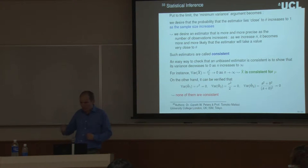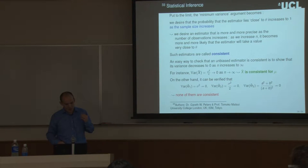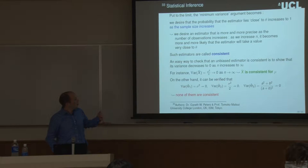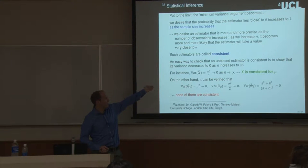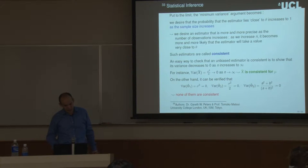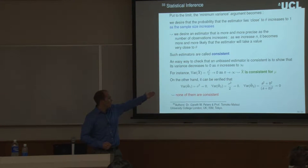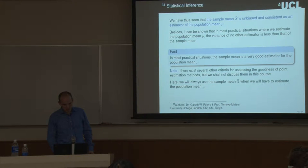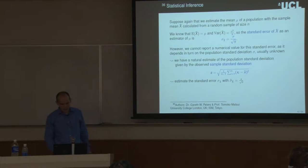The third desirable property of an estimator is consistency, which states that as we gather more and more data — as n tends to infinity — the variance of the estimator should tend to zero. For the sample mean, the variance is sigma squared over n, so this clearly tends to zero. Whereas naive choices of estimator for the mean don't have this property. So the sample mean is a pretty good estimator to use in general.